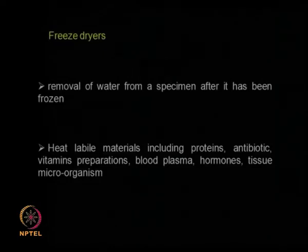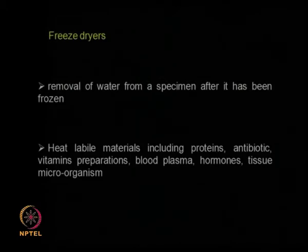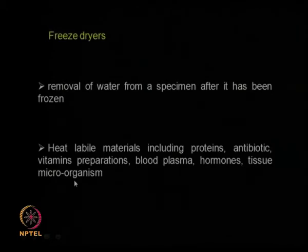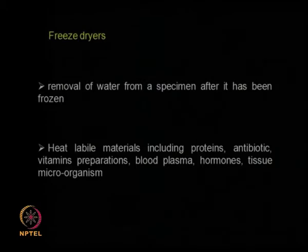The freeze dryer is different from the previous dryers where you apply heat to raise the temperature. Here you use the freezing concept — you reduce the temperature so that the moisture becomes ice and water is removed after being frozen. It is very good for heat-labile materials like proteins, antibiotics, vitamins, blood plasma, hormones, tissue, and microorganisms. If you raise the temperature, the material will totally get deactivated, so there is no other way than freeze drying here.